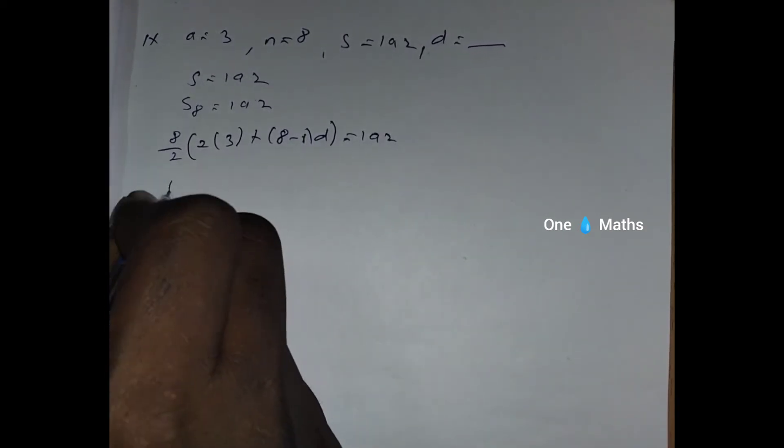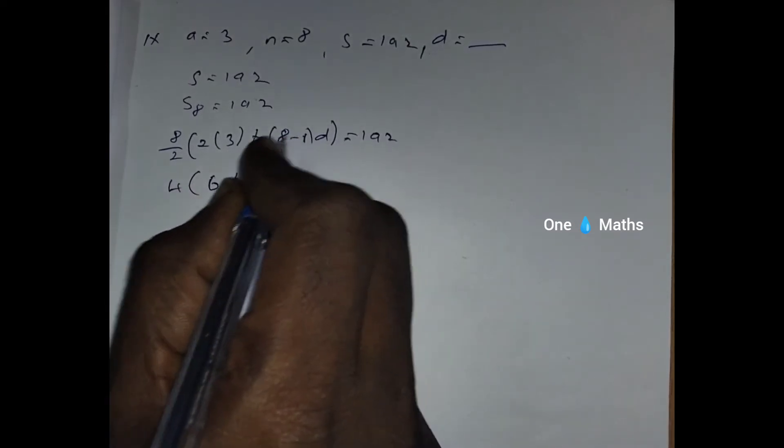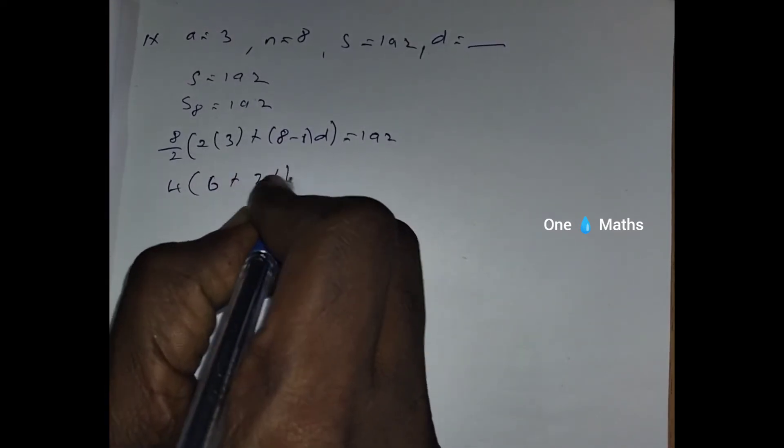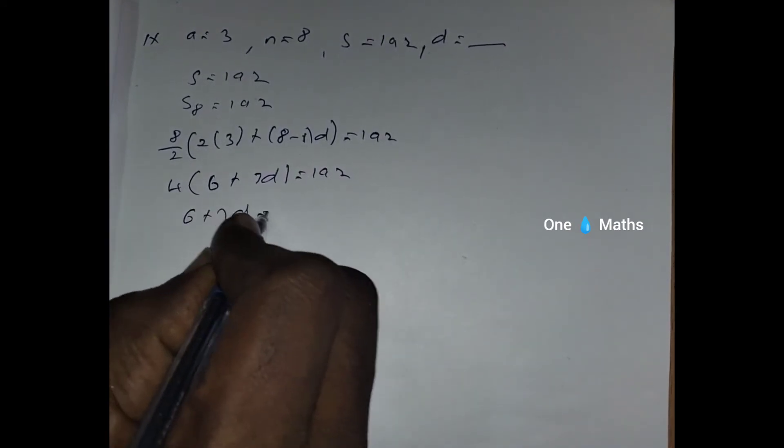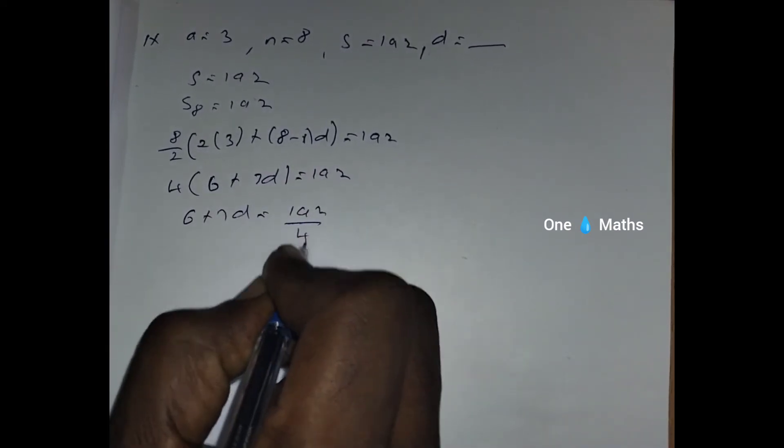So now we are able to minimize 4, here 6 plus 7D equals 192. So we are going to divide, 6 plus 7D equals 192 divided by 4.